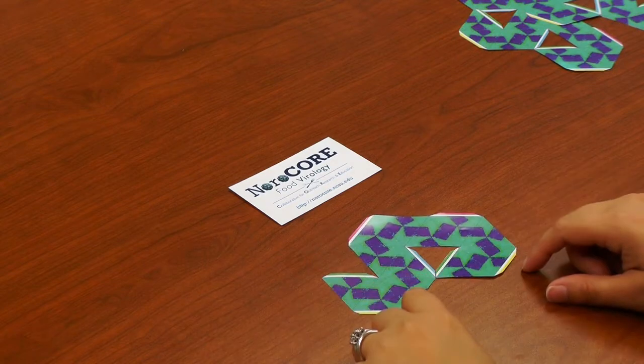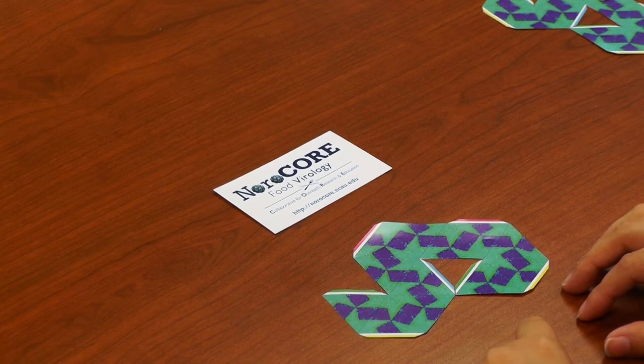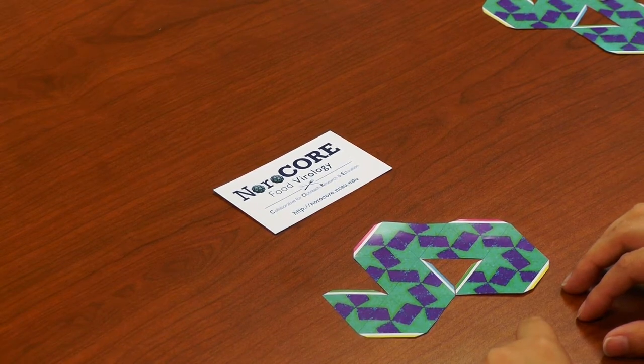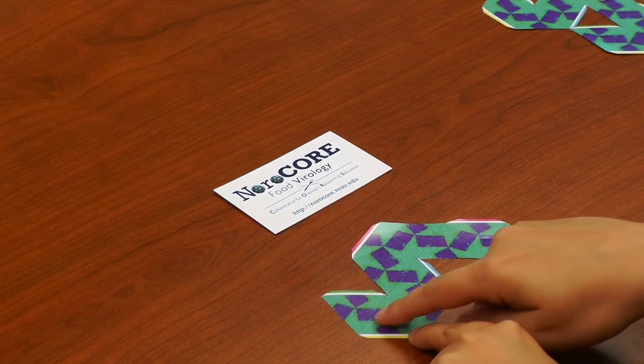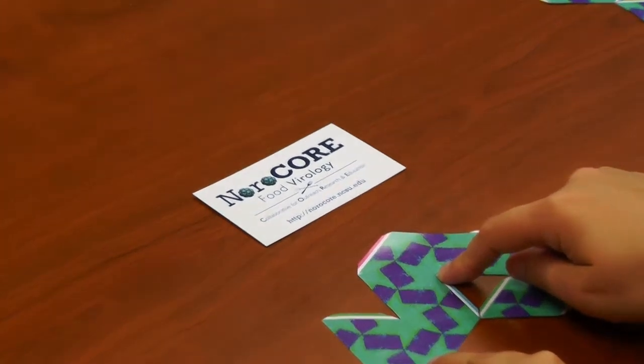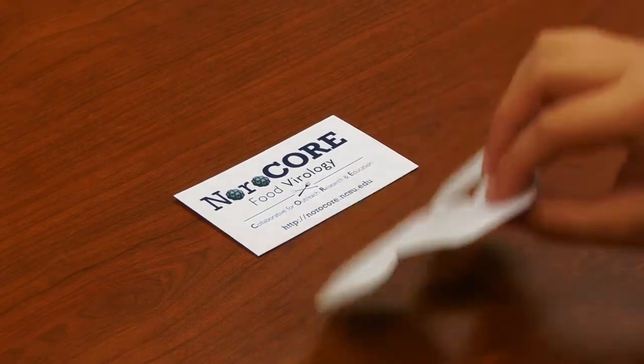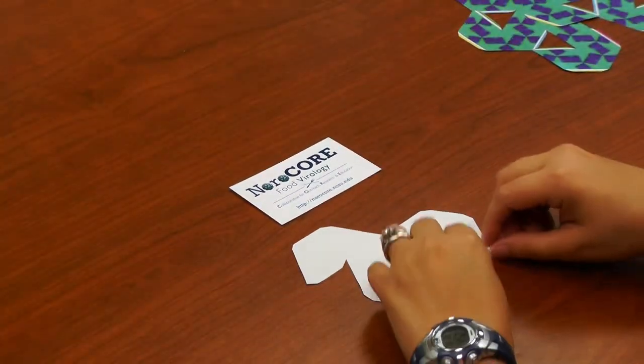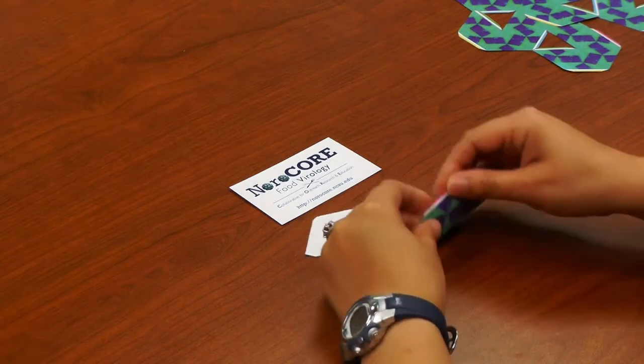The way I like to do the folding is to fold everything first. It just makes it a lot easier when you're going to put the model together. I start with the tabs and then fold these smaller lines that are going to be on the surface of the virus. I also like to flip the model over and fold everything up away from me so that I can see the lines as I'm folding.